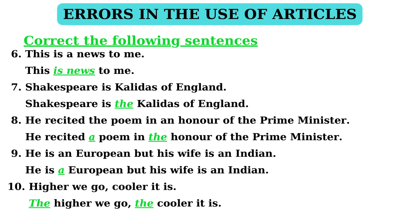In sentence 9: 'He is an European, but his wife is an Indian.' Now, in this sentence, if a word begins with a vowel but gives the sound of a consonant, 'a' should be used before it. The correct statement is: 'He is a European, but his wife is an Indian.'